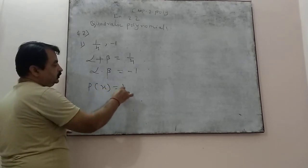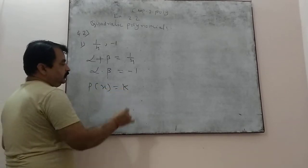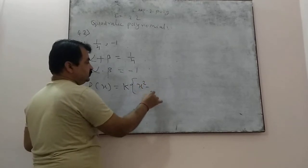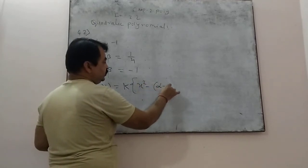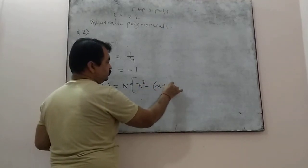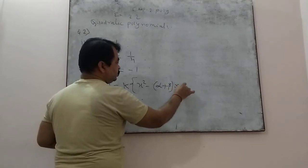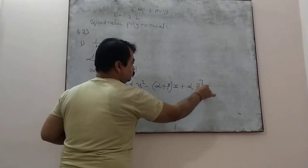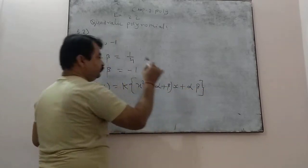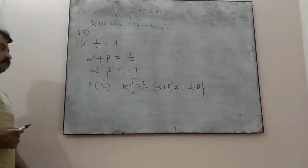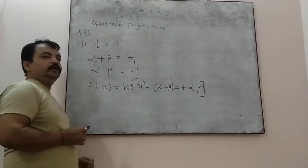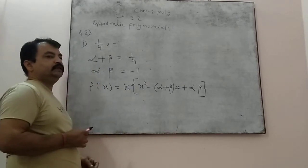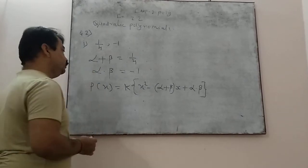I have given the direct formula to make the quadratic polynomial. Polynomial in x: k times, in curly bracket, x squared minus sum of zeros — that is alpha plus beta — into x, plus product of zeros — that is alpha into beta. This is the formula to make the quadratic polynomial with the help of the given zeros.